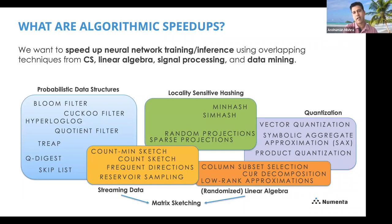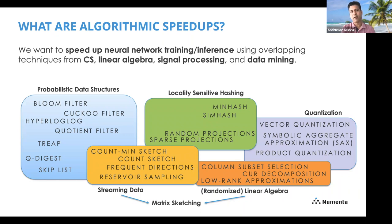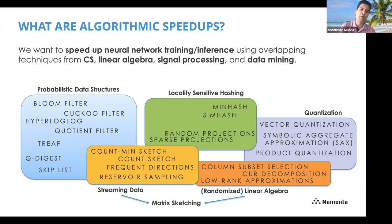What exactly are algorithmic speedups? It's not a term that comes from the literature. It's essentially a bucket I'm using to capture a lot of techniques from CS, linear algebra, signal processing, data mining, streaming data, and so on. All of these techniques have heavy conceptual overlaps and together they can be used to speed up neural network training or inference.